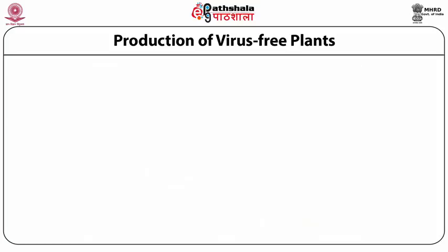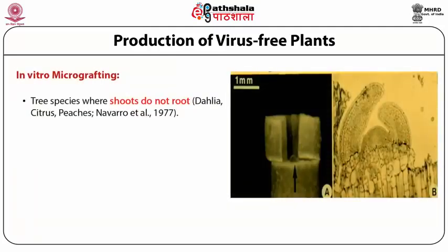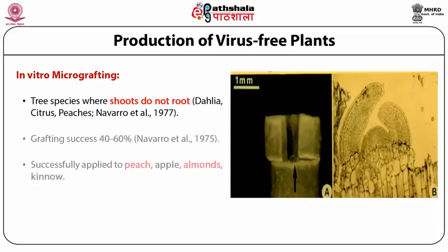The third technique is micro-grafting, developed for trees such as dahlia, citrus, and peaches. The problem with shoot tip culture of tree species is that it is very difficult to root them — shoots may develop but rooting is difficult. Therefore, the alternative when the shoot develops is to take the shoot tip and graft it onto a rootstock. A tiny little bud is grafted on the rootstock, makes a union, and develops into a full plant. This has been applied to a number of fruit trees.